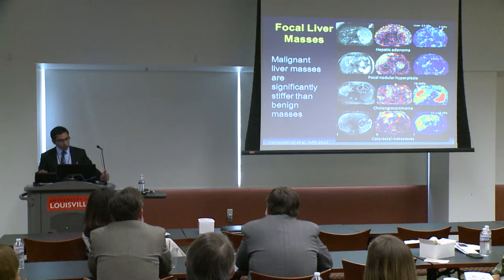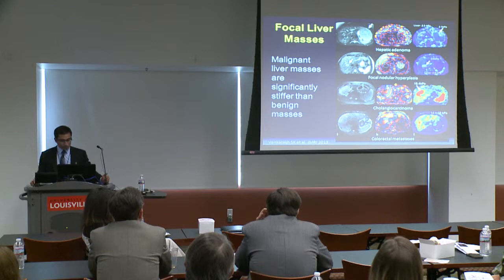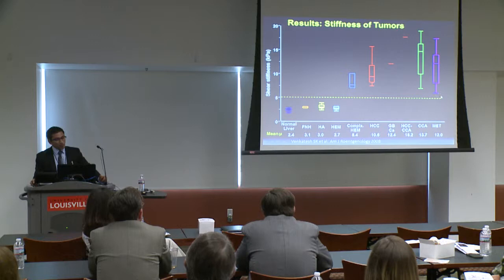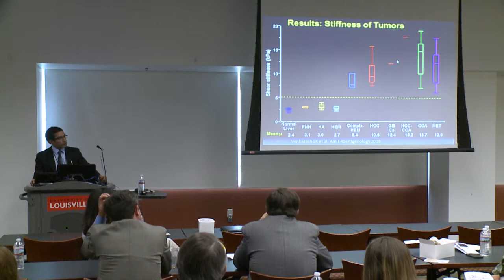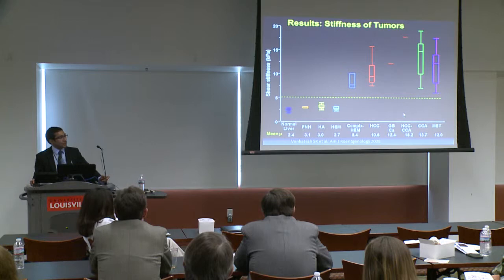Another application is differentiating malignant from benign liver tumors. We showed that malignant liver masses are significantly stiffer than benign liver masses, using a cutoff of 5 kilopascals. All malignant tumors were separated from benign tumors, except for 2 hemangiomas that were actually very fibrotic — sclerosed hemangiomas — which gave false positives. There were no false negatives.